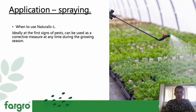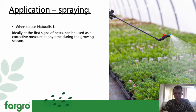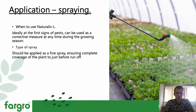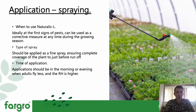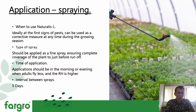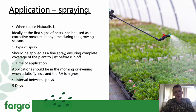When do we want to use a product like Naturalis? It's really important to use it at the first sign of pests, so making sure you're crop walking and monitoring regularly is very important to get the best out of most biopesticides — they work effectively at low population pressures generally. Think about the type of spray: a fine spray to ensure good coverage is important. Timing of application: looking at either morning or evening when relative humidities are higher and adults are flying less. And an interval between sprays of five days. Having those back-to-back applications after five days is really key for getting proper knockdown below an economic damage threshold, especially where you've got layering of pests such as whitefly or aphid.